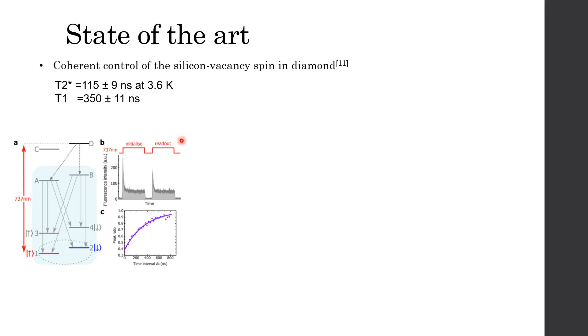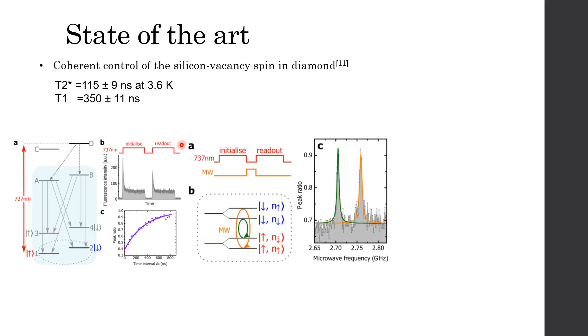In order to address spin of the SiV center, they apply a microwave pulse between the optical initialization and readout pulses. Due to the nucleus being spin one-half of the silicon-29 isotope, each electron spin state displays a hyperfine splitting. The microwave field drives the electron spin while preserving the nuclear spin state, which causes two distinct microwave resonance frequencies, the green arrow and the orange arrow, leading to two peaks in the spectrum.